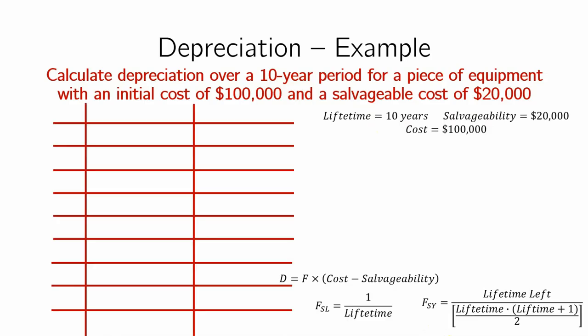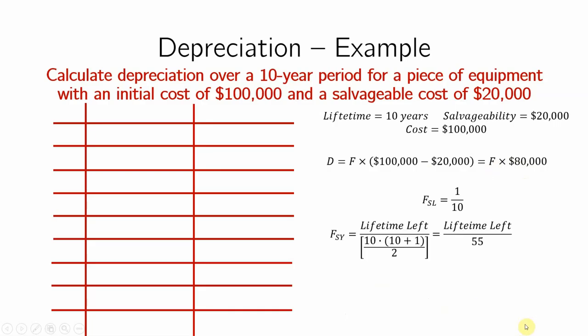So I will have a table that will be for the 10 years, and let's start plugging things in. So for the D factor, as you have here, I'm going to do cost minus salvageability, $100,000 minus $20,000, it will be just the factor times $80,000. For the straight line, it will be 1 over lifetime, which will be 1 over 10. And for the sum of years, I'll leave the lifetime left as an index, and I'll just substitute in 10 and 11 and 2, and I'll get that it's lifetime left over 55. And so let's see how this works.